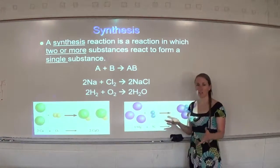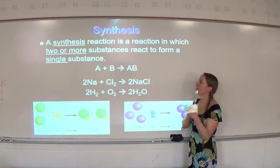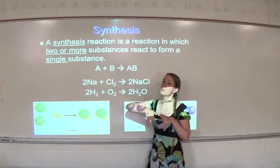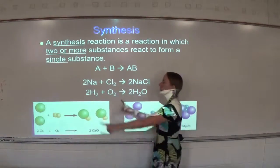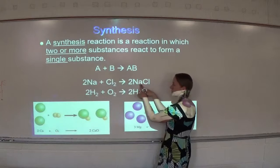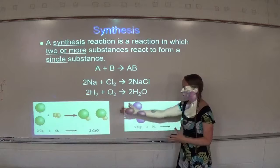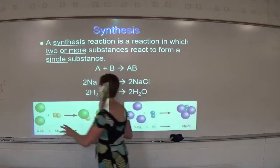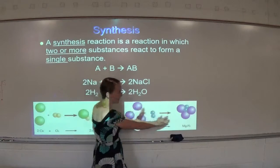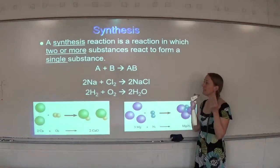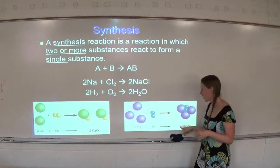I like to say synthesis is like a marriage — A and B come together and make one. It could be two or more substances, but think of it as two coming together to make one. So here we have Na and Cl coming together to make NaCl. Here we have H2 and O2 coming together to make H2O. We also have calcium and oxygen making calcium oxide, and magnesium and nitrogen making magnesium nitride. The key thing to look for is one product.